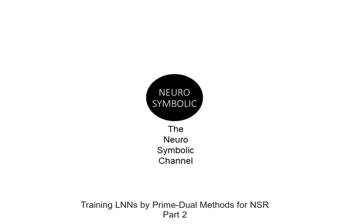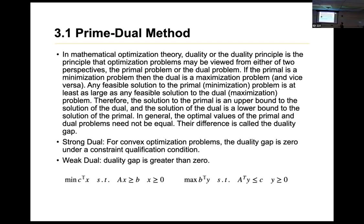Before talking about the AIADMM, we have to mention this first. The previous method is called AOM — the augmented Lagrangian method. Before getting there, we have to mention a lot of mathematical skills referenced in the paper.